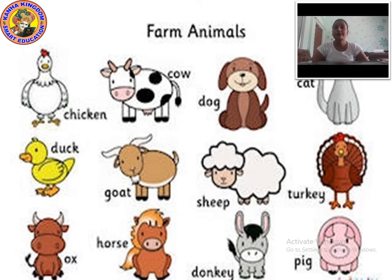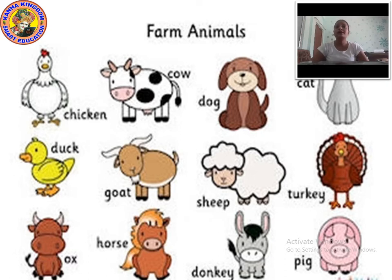So all these animals — cow, dog, chicken, cat, duck, goat, sheep, turkey, ox, horse, donkey, and pig — are kept in the farm. So these animals we call farm animals.